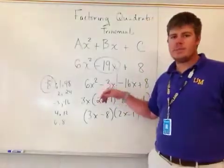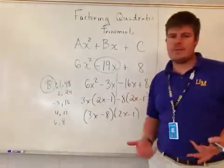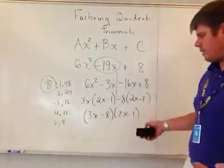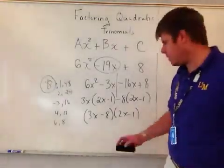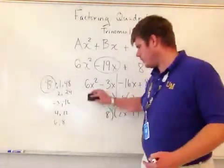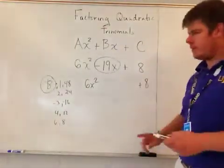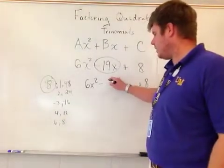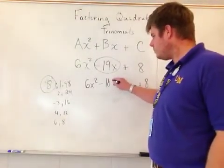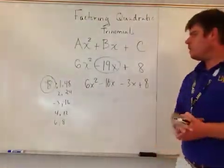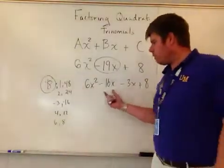Let's say I want to switch this up and put negative 16x over here instead of negative 3x. It doesn't matter - the order doesn't matter. Just to prove that I would still get (3x - 8)(2x - 1), let's check. What happens if I wrote negative 16x here and minus 3x here?